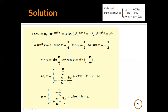For the first equation: if sin x = sin(π/6), then x = π/6 + 2kπ or x = π − π/6 = 5π/6 + 2kπ. For the second equation: x = −π/6 + 2kπ or x = π − (−π/6) = π + π/6 = 7π/6 + 2kπ.